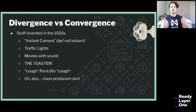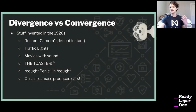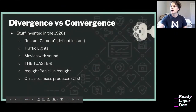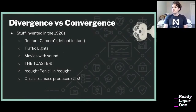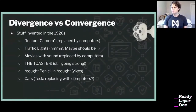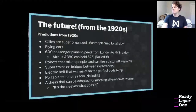Let's look at some things invented a hundred years ago in the 1920s. You have the instant camera — definitely not instant, which is why I put it in quotes — traffic lights, movies with sound, the toaster, and penicillin. Most of these inventions were actually replaced by computers. Mass-produced cars — maybe Tesla's going to replace those with autopilot. But the toaster is still going strong, and that's the takeaway.